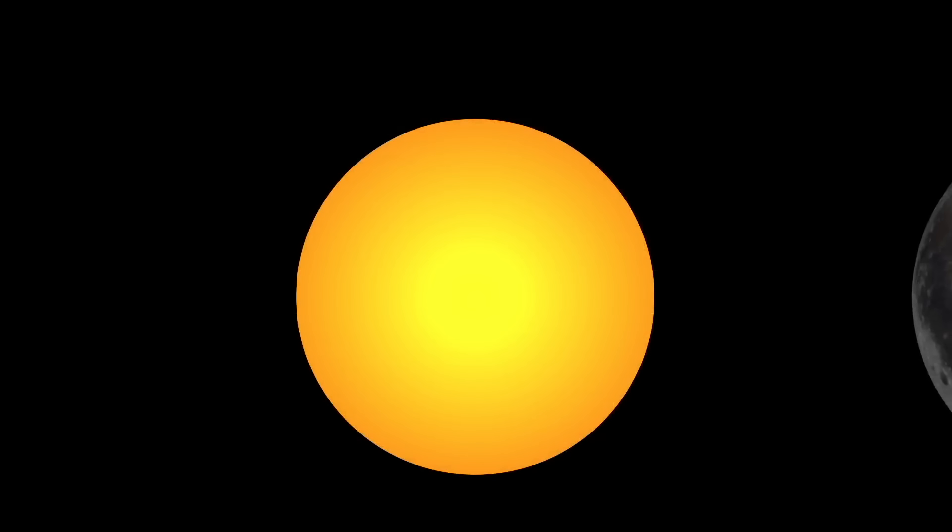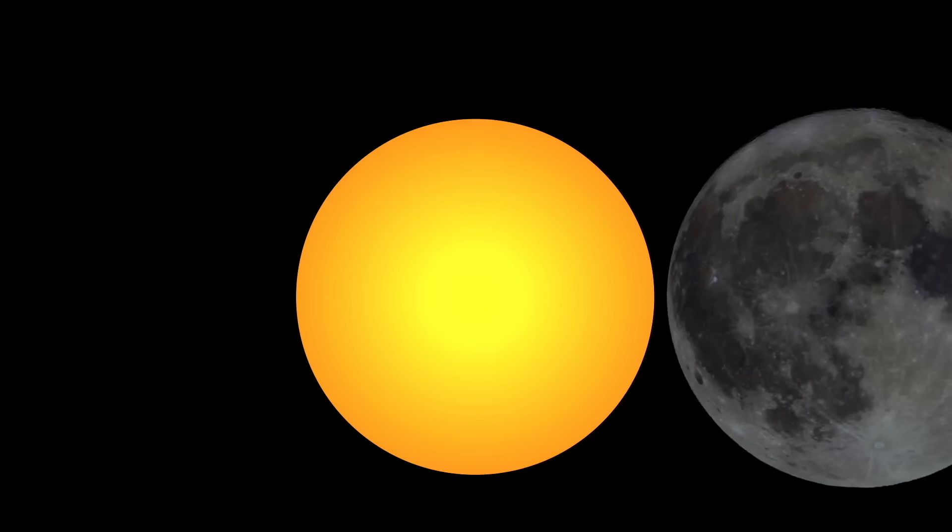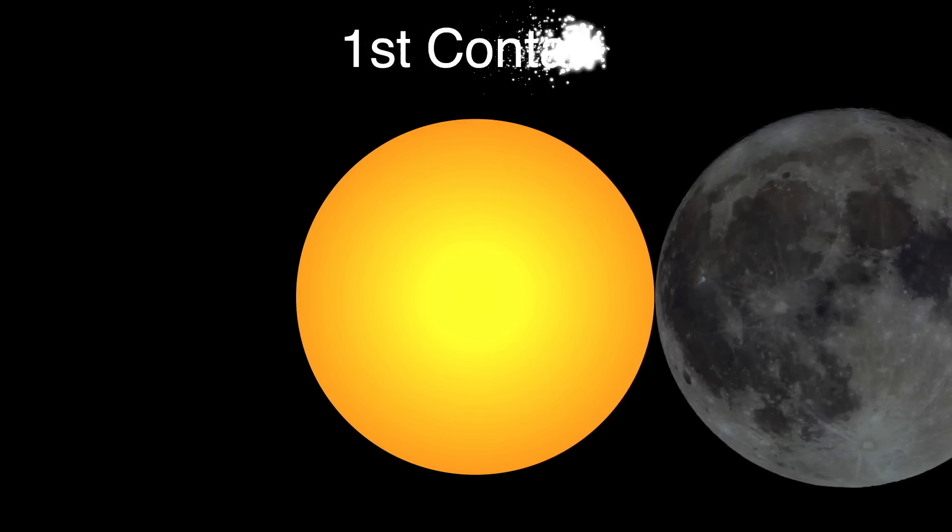First contact, or C1, is when the moon first starts to cover the face of the sun. I've momentarily brightened the moon so we can see it, but it's really invisible since we're looking at the dark side of the moon against the blinding surface of the sun.